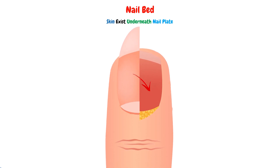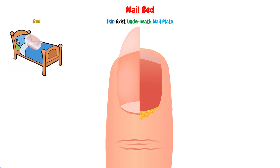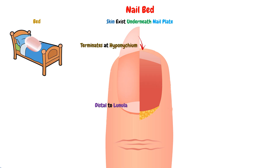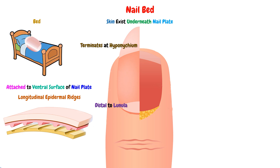The nail bed is the skin that exists underneath the nail plate. It's named so because it looks like a bed that the nail plate lies on. This bed extends from after the lunula, or distal to the lunula, and terminates at the hyponychium. The nail bed is attached to the ventral surface of the nail plate by longitudinal epidermal ridges, which are protrusions and grooves that exist on both the nail bed surface and the ventral surface of the nail plate.